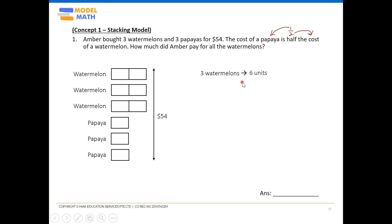So you can write this out. Three watermelons, of course. One, two, three, four, five, six. Six units. Three papayas will be three units. This is optional.